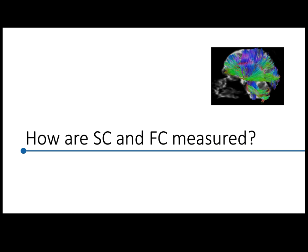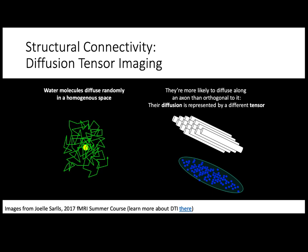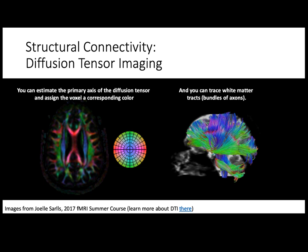Let's talk about how these two are measured, starting with structural connectivity because it makes more intuitive sense. You want to know if A and B are connected? Let's find the connections. That's the promise of structural connectivity. Diffusion tensor imaging tries to measure structural connectivity using the diffusion of water molecules. If you have a water molecule in a totally homogeneous space, it's going to diffuse randomly — no more likely to go left than right. But in a non-homogeneous space like an axon in the brain, the water molecule is more likely to diffuse along the axon than perpendicular to it.